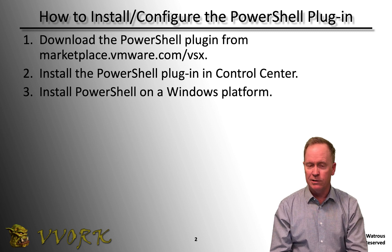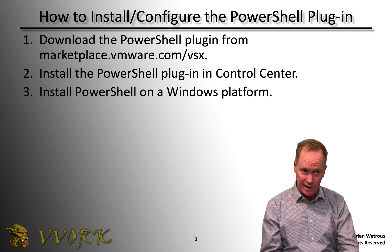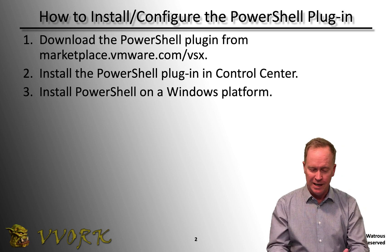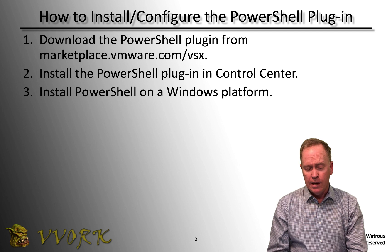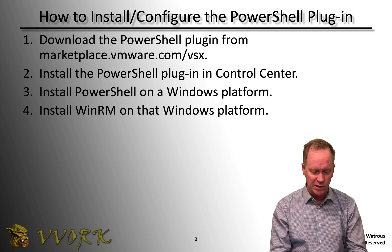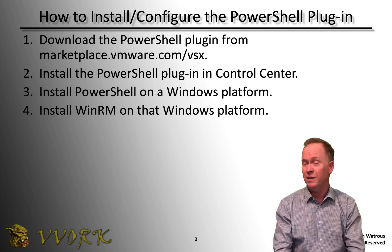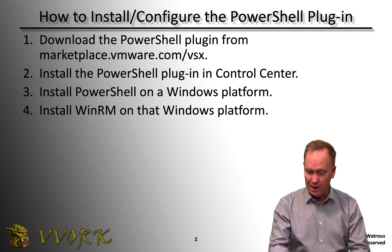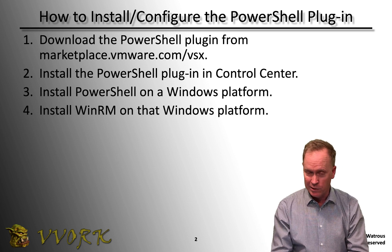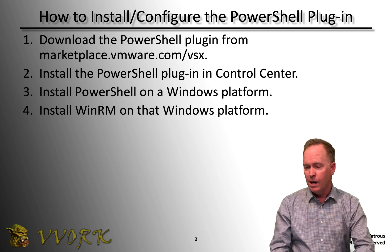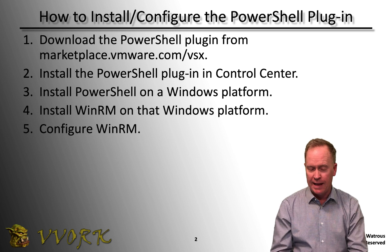Moving on to step three: you're going to need to install PowerShell onto a Windows system. I'm not a Windows expert, so I won't cover that in detail — you can look at other online resources. Additionally, you're going to need to install WinRM. I've always assumed WinRM is installed on Windows machines by default, but if not, you'll need to figure out how to install it. I want to focus on the part of the Windows setup required for the PowerShell plugin to work, which is configuring WinRM. I'm making use of information from a blog post shown at the bottom of the screen.